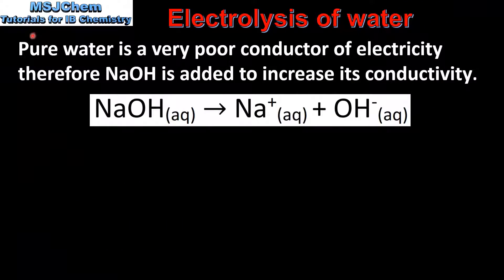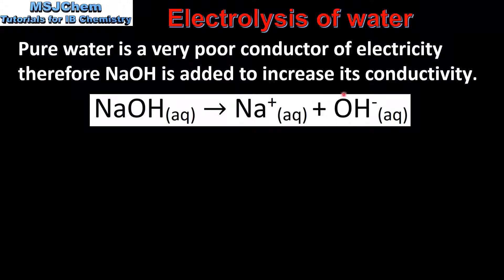Next we look at the electrolysis of water. Pure water is a very poor conductor of electricity, therefore sodium hydroxide is added to increase its conductivity. Sodium hydroxide dissociates to form sodium ions and hydroxide ions.